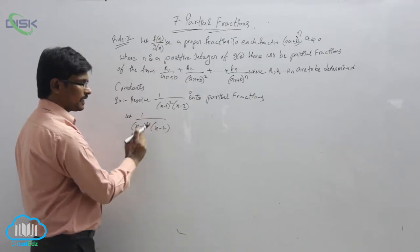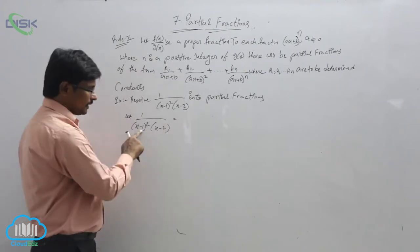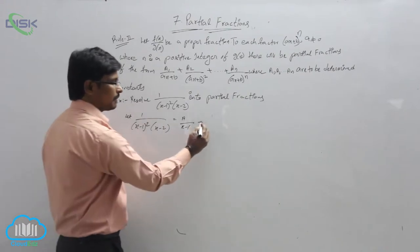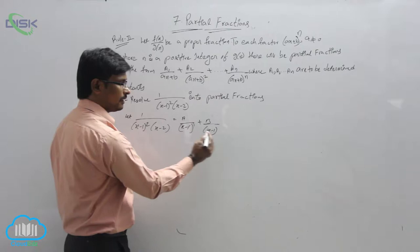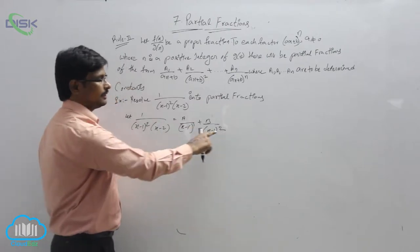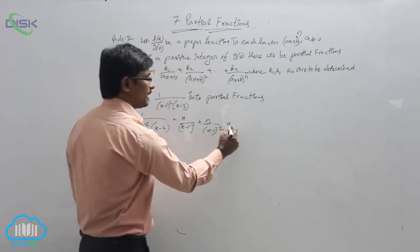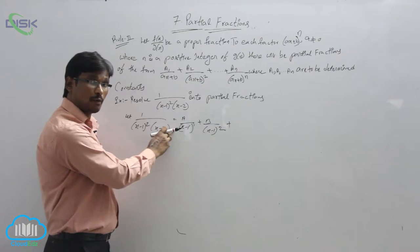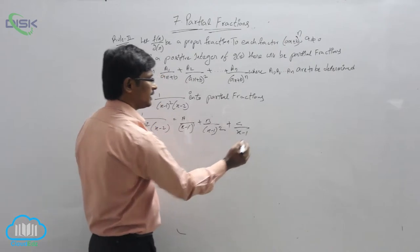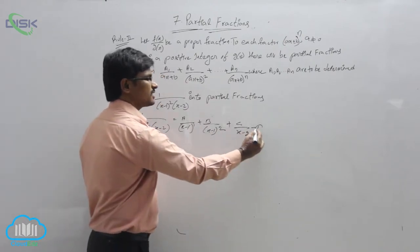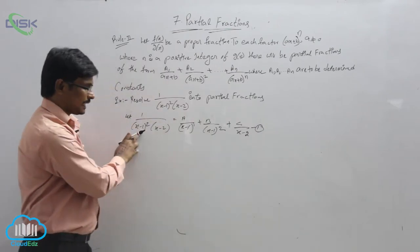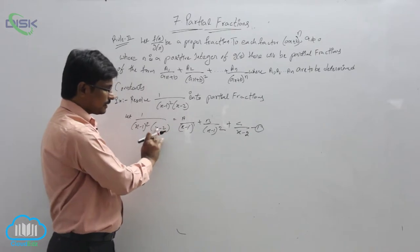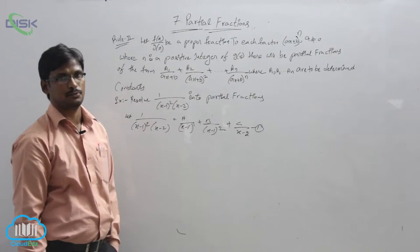The given expression is 1/[(x-1)²(x-2)]. Since (x-1)^2 is present, we write: A/(x-1) + B/(x-1)² + C/(x-2). This is equation number 1. Note that because (x-1)^2 is there, we write terms for both (x-1)^1 and (x-1)^2. The remaining factor (x-2) has (x-1)^1, so by Rule 1 we write C/(x-2).